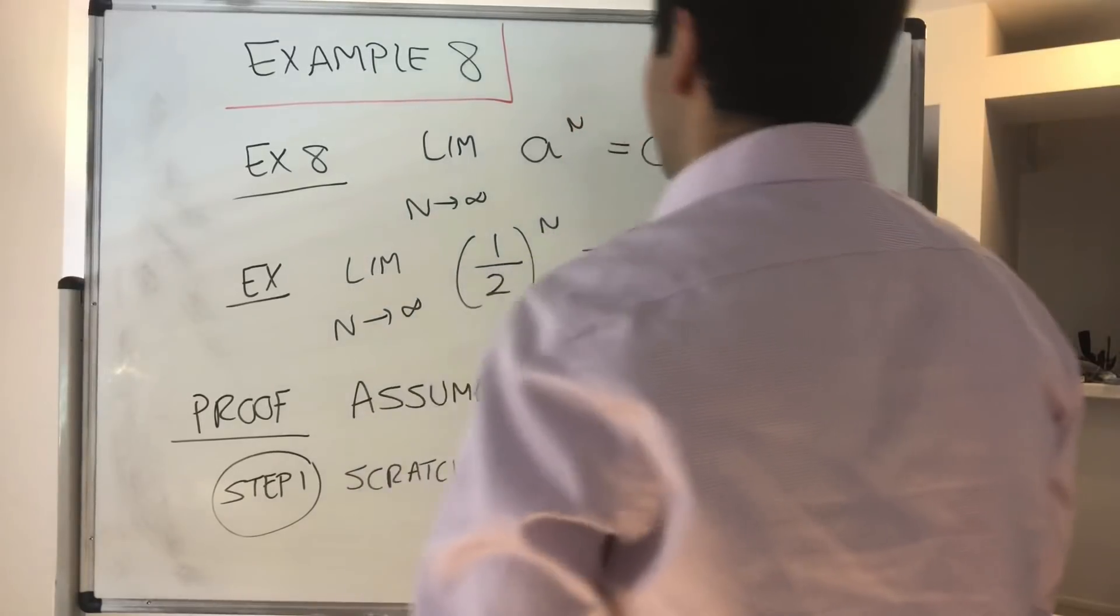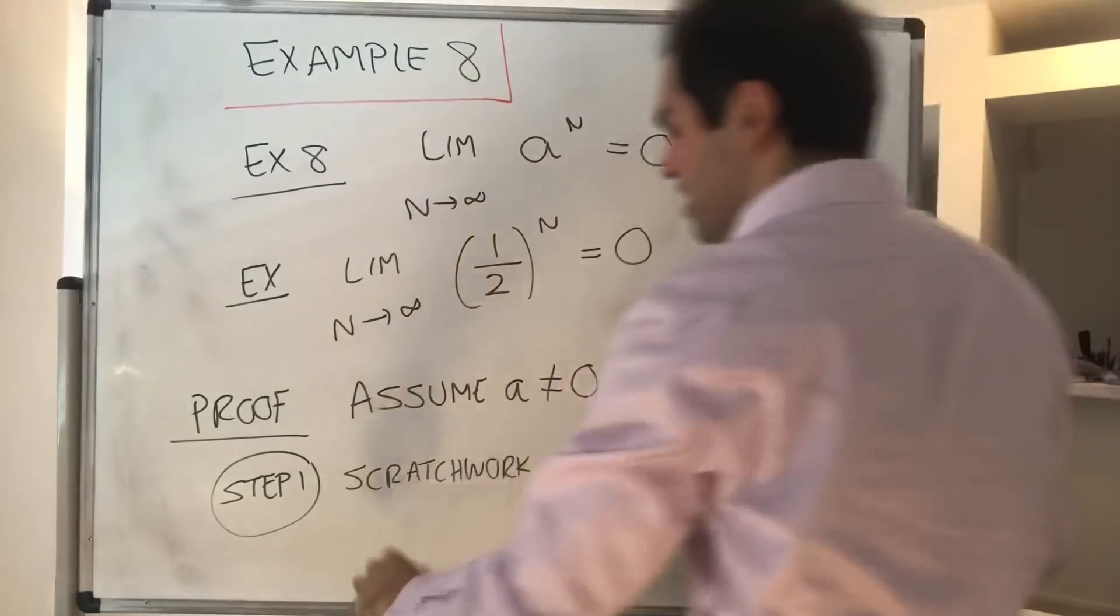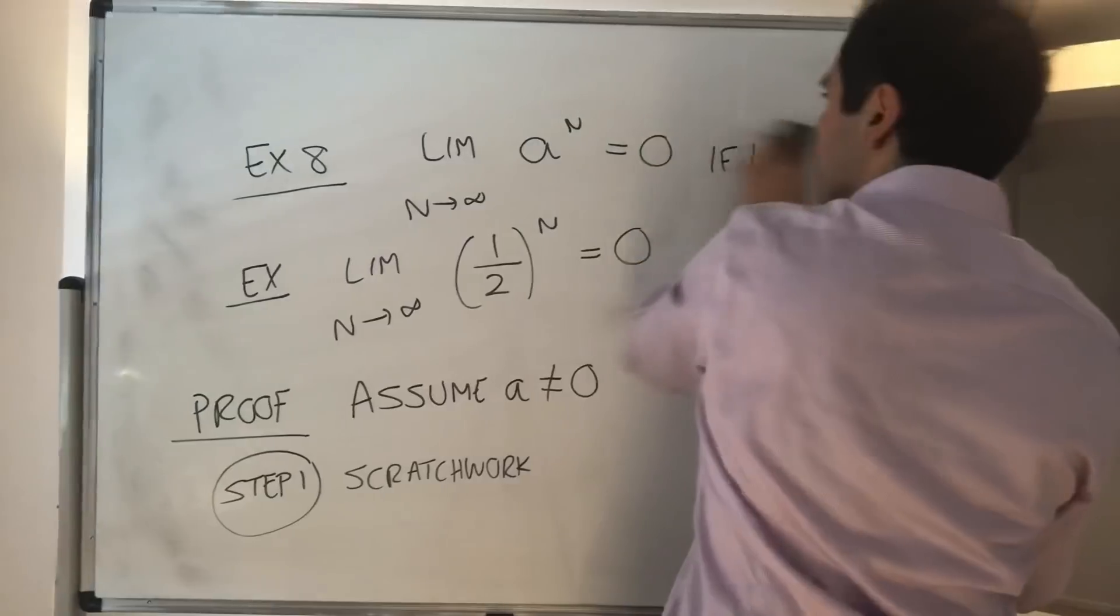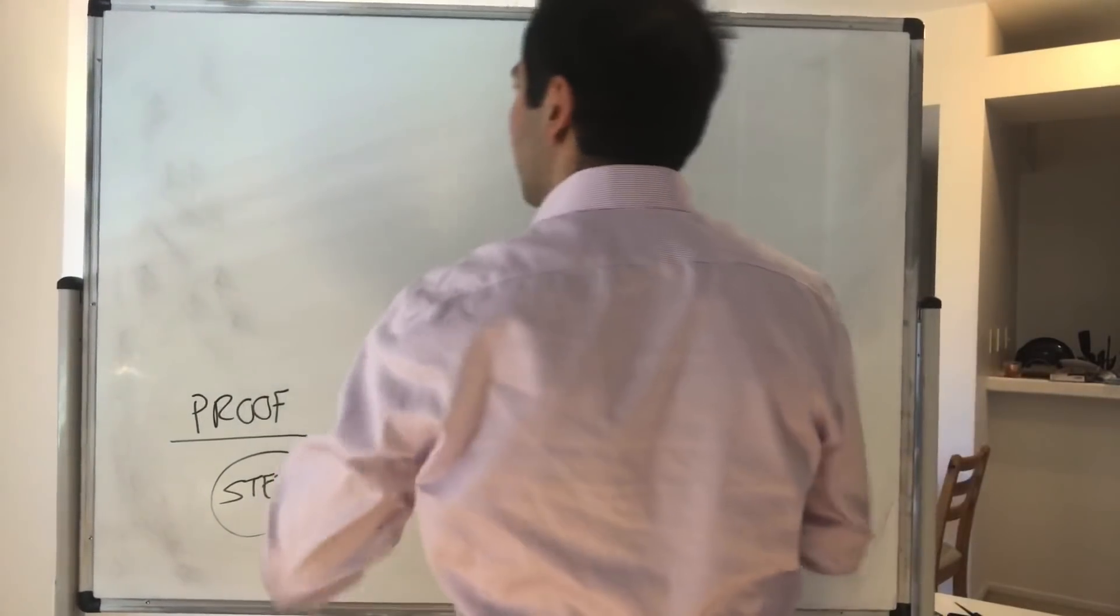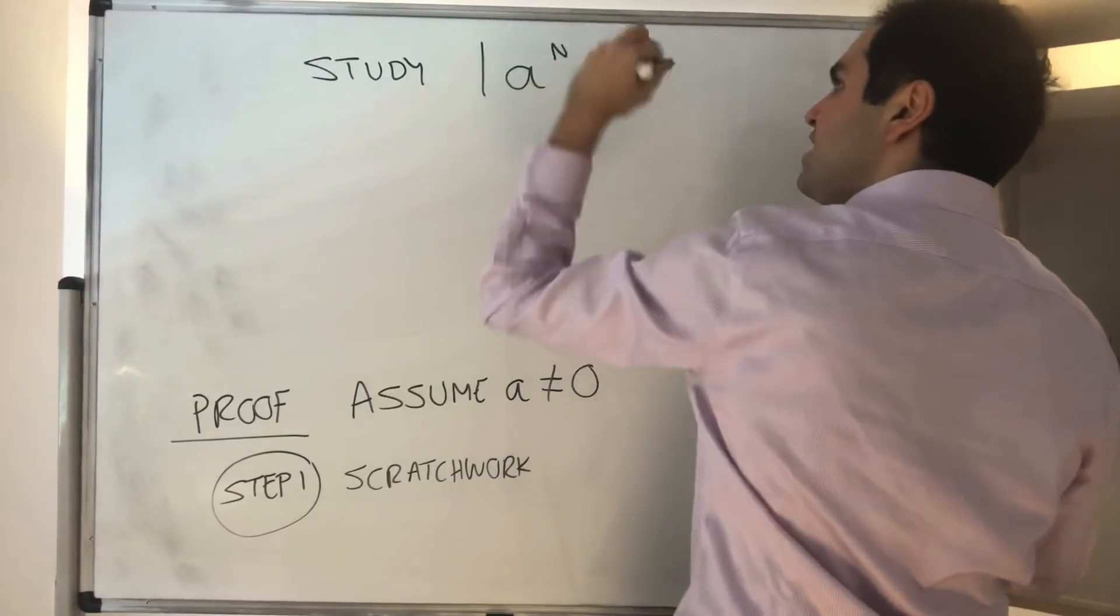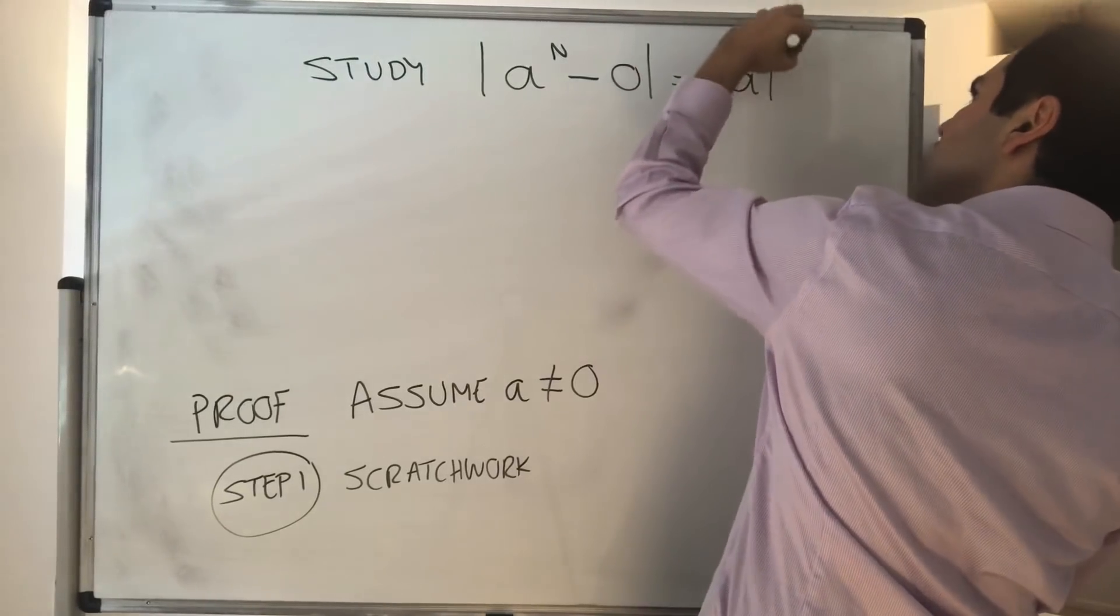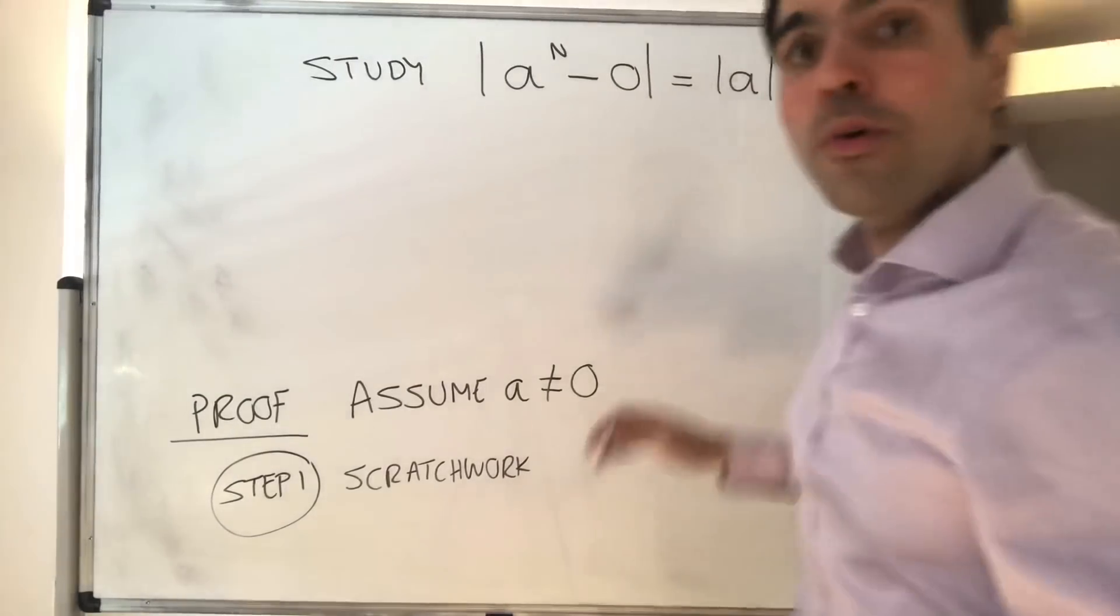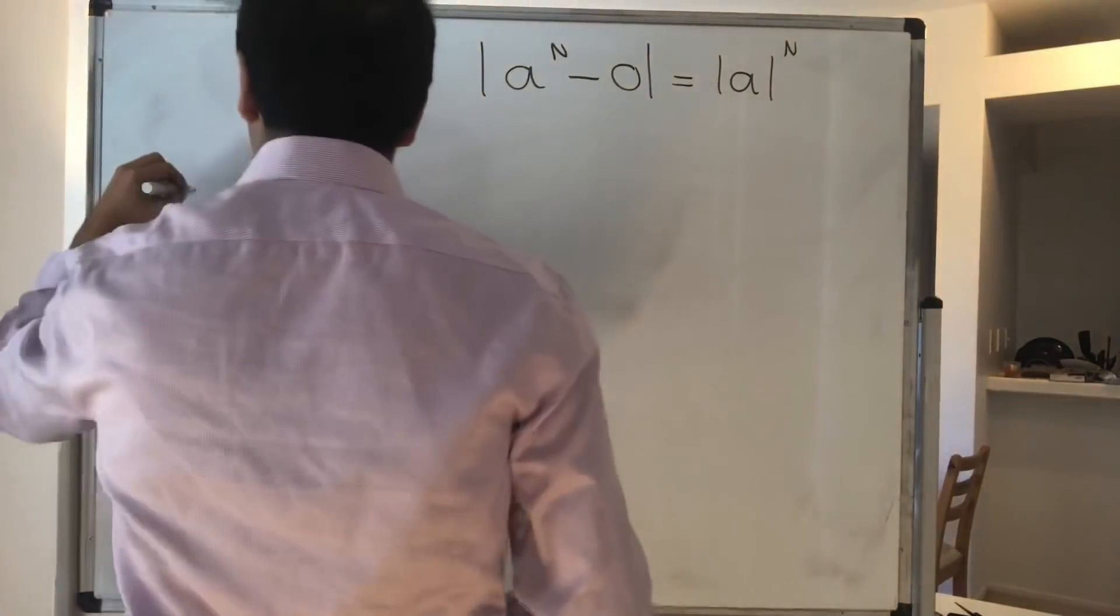So what would we like to compare? We would like to compare a to the n with zero. In other words, what we want to show is that this becomes very small. So we would like to study the difference between our sequence and our limit, which you can just write as absolute value of a to the n. Now here's the thing. a is a small number.